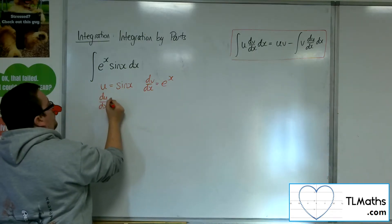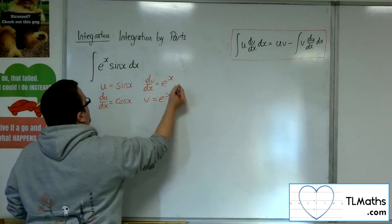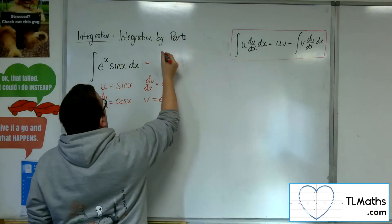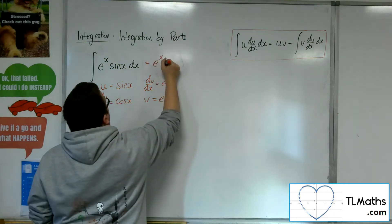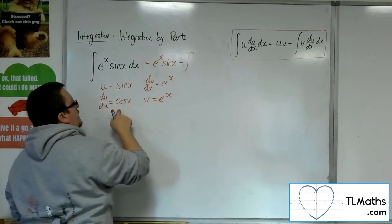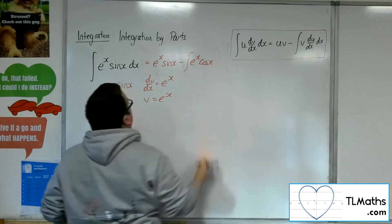So du by dx will be cosine of x, and v will be e to the x. So we'd have u times v, so e to the x sine x, take away the integral of v du by dx. So e to the x cosine x dx.